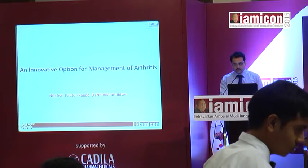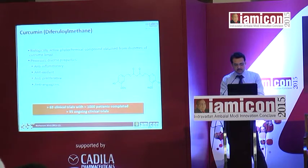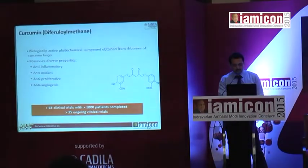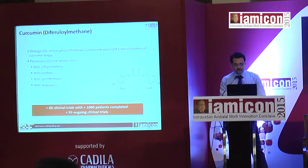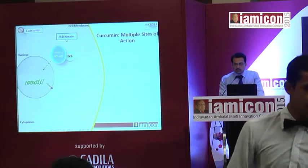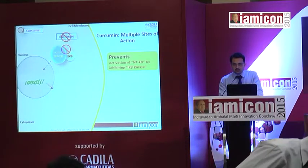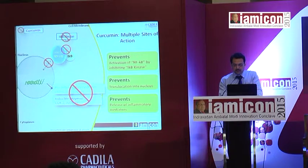An innovative option for management is an NF-κB inhibitor, which stops the inflammation process at the basic level. The molecule is curcumin — a biologically active compound that possesses many properties including anti-inflammatory, antioxidant, anti-proliferative, and anti-angiogenic effects. It has been studied in more than 65 completed clinical trials on over 1,000 patients, with 35 trials still ongoing. Curcumin acts at multiple sites: it prevents the activation of NF-κB, preventing its translocation into the nucleus and blocking the release of inflammatory mediators, thereby stopping the inflammatory process from starting.